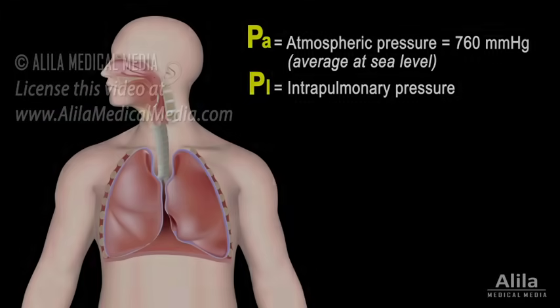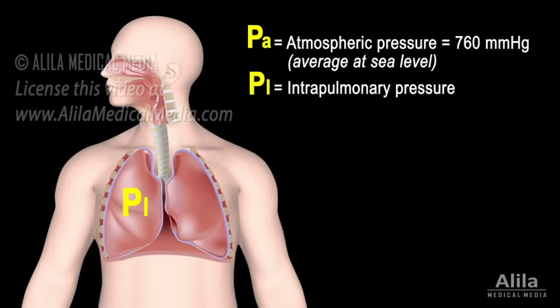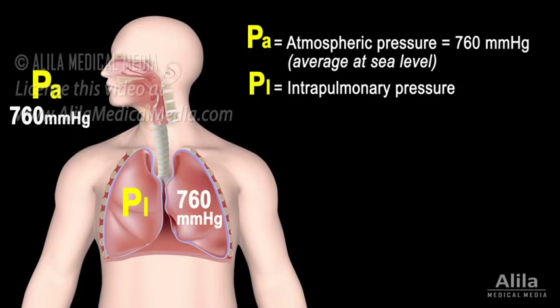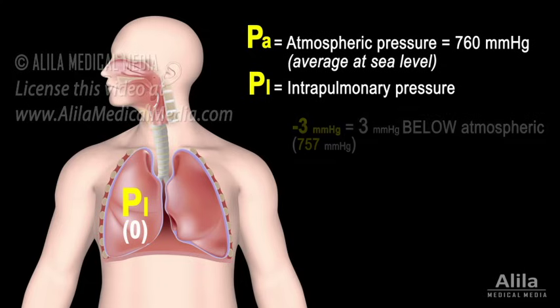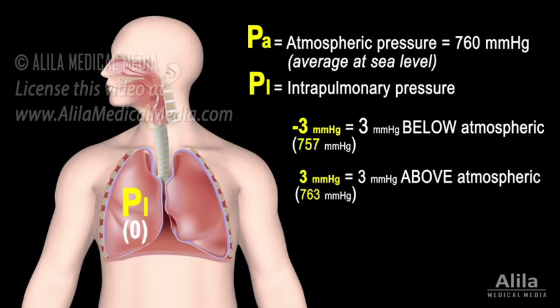At rest, in between breaths, the pressure inside the lungs, or intrapulmonary pressure, equals the pressure outside of the body, or atmospheric pressure. When discussing respiratory pressures, this is generally referred to as a relative pressure of zero, because what matters is the difference between the two pressures, not their absolute values. Thus, a negative pressure is a pressure below atmospheric, while a positive pressure is above atmospheric.